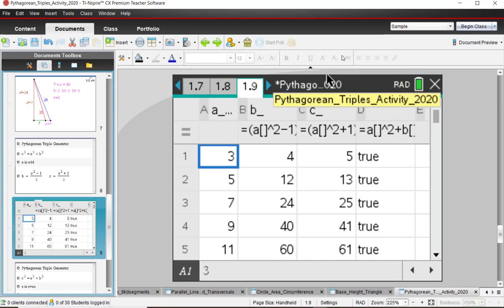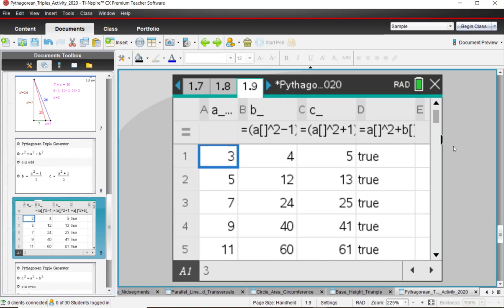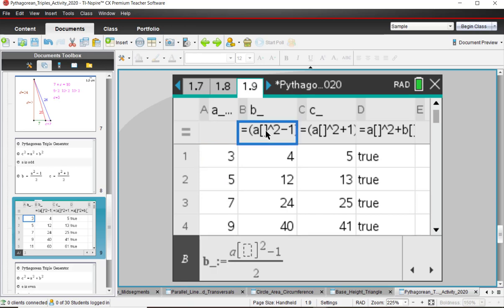So to check this out, I created a spreadsheet to do this, and I put in column A odd numbers 3, 5, 7, 9, 11, and so on. In column B, when I plug here, you can see it's whatever A is squared minus 1 all divided by 2 that generated these numbers. And the hypotenuse was generated by whatever A is squared plus 1 divided by 2.